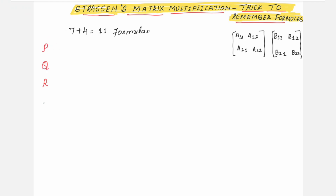For all 7 formulas, you are assigning them to some variables. This particular trick is useful if you are using the variables P, Q, R, S, T, U, V. So, let us write the formulas here using the trick. Whatever I had written here — the elements of matrix A and matrix B — this will help us in writing the formula for P.